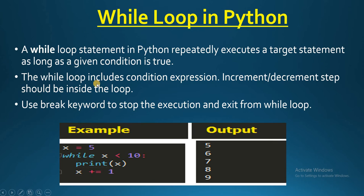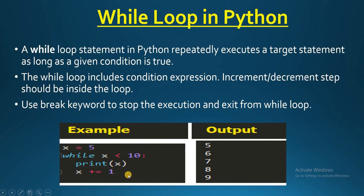The while loop structure includes a condition expression and increment or decrement steps that should be inside the loop. In this example we have x equal to 5, and while x is less than 10, we are incrementing x by 1. That's why the increment or decrement steps must be inside the loop — if they are outside, the condition will not be followed correctly.